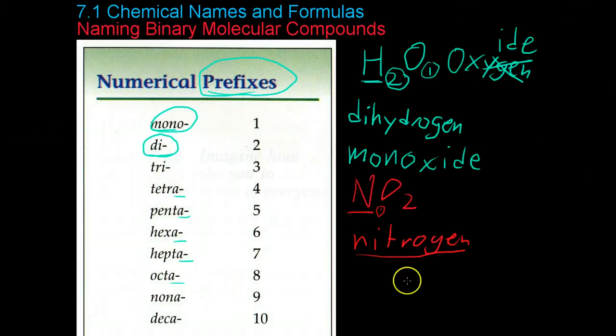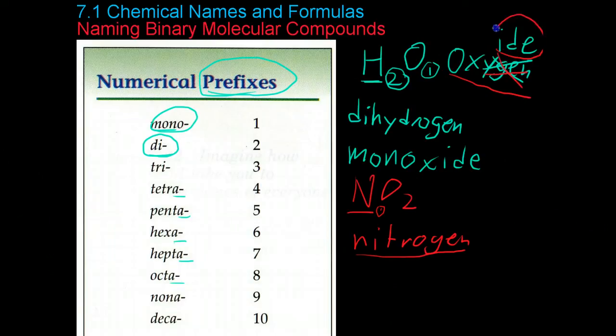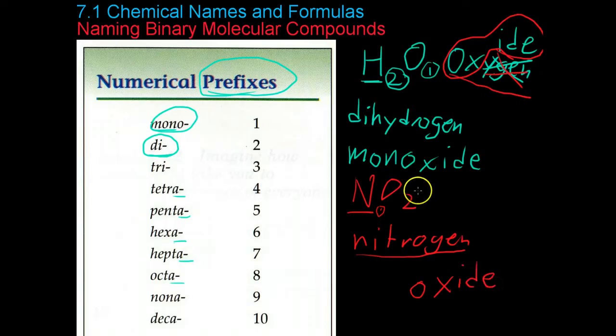And the same rules apply now that apply to the earlier water example. You take the second element, oxygen. You write it out, like I did up here. Cross off the ending and replace it with -ide. So you now have the word oxide. You write that down and you use the proper prefix for the number of atoms within that compound. In this case, you'd use the prefix di.